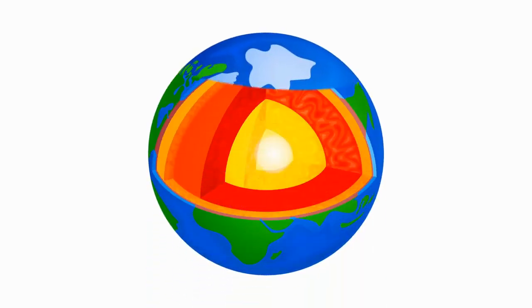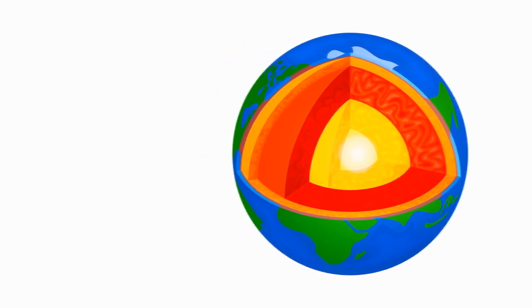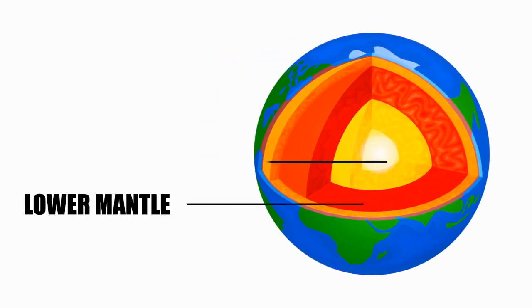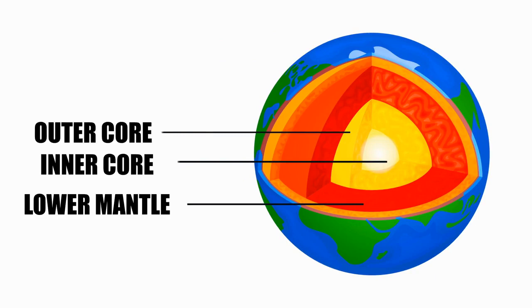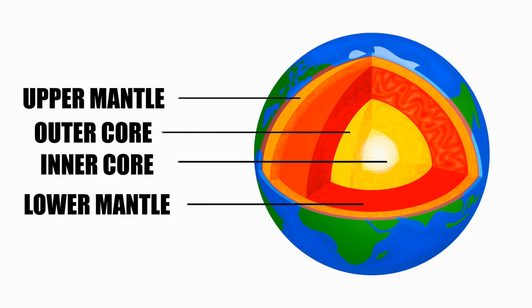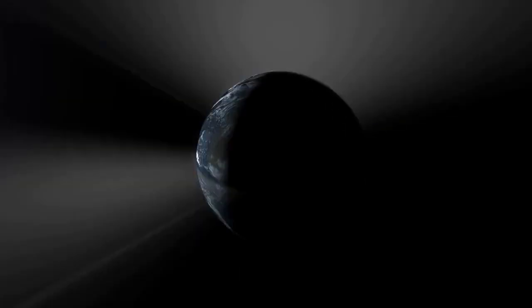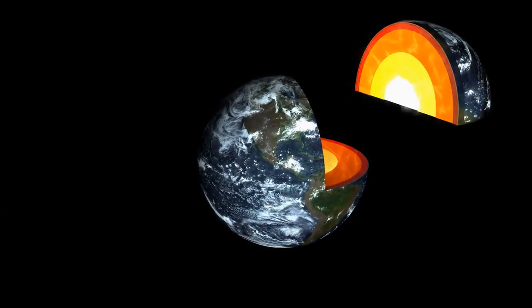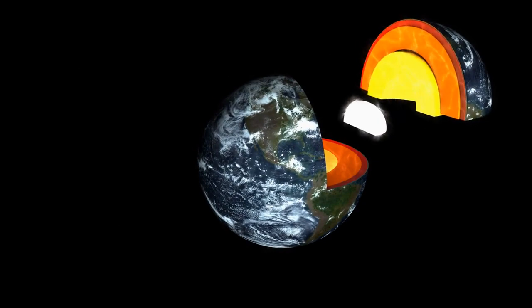The Earth is composed of several layers, each with distinct properties and compositions that play crucial roles in the planet's structure and behavior. These layers, from outermost to innermost, include the crust, mantle, outer core, and inner core.